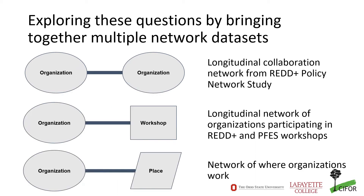As someone who works primarily with network data, one of the most exciting things about this research project is the unique datasets. It's not common to have information about how collaborative networks change over time. Here we're able to draw upon data from the REDD+ Policy Network study about collaborative interactions among forest governance stakeholder organizations at three time periods. We've also been able to access records of how organizations participated in a large number of workshops on PFAS and REDD+ over a time period that includes the three waves of collaborative network data, as well as information about where organizations work. All together, this is a longitudinal network with three different types of nodes: organizations, workshops, and places.